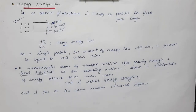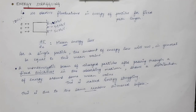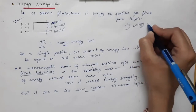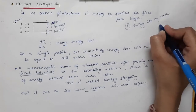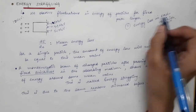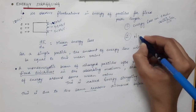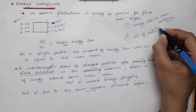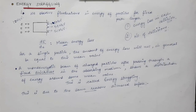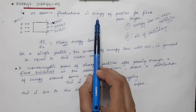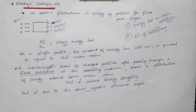Energy straggling is also due to the same reasons as range straggling. First, there are fluctuations in the energy loss in each collision — every single particle loses a different amount of energy per collision. Second, there is a fluctuation in the number of collisions faced by a particle in traveling a given thickness. Due to these fluctuations in energy loss per collision and number of collisions per unit path length, there is a fluctuation in energy for fixed path length — that is energy straggling.